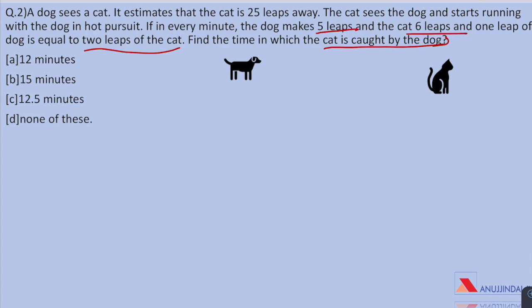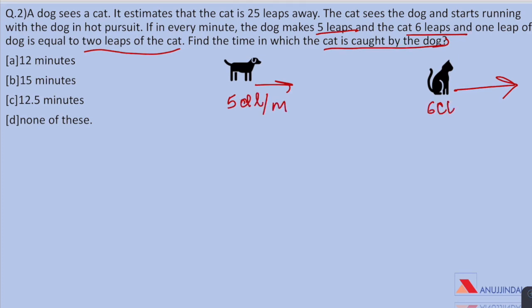If two of them are traveling in the same direction we will be subtracting their speeds. Dog takes 5 dog leaps per minute and the cat takes 6 cat leaps per minute. 6 cat leaps are equal to 3 dog leaps per minute and the dog takes 5 dog leaps per minute.